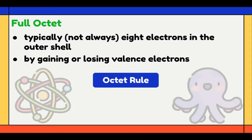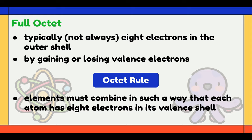This satisfies the octet rule. The octet rule states that elements must combine in such a way that each atom has 8 electrons in its valence shell, so that it has the same electronic configuration as a noble gas.